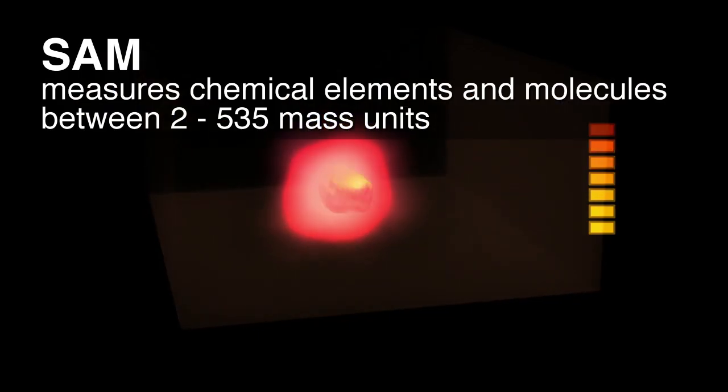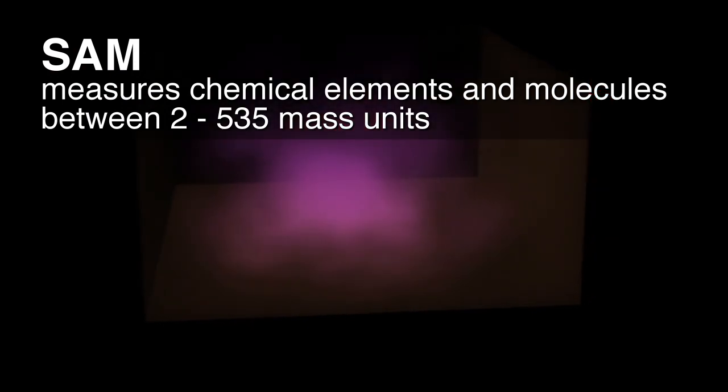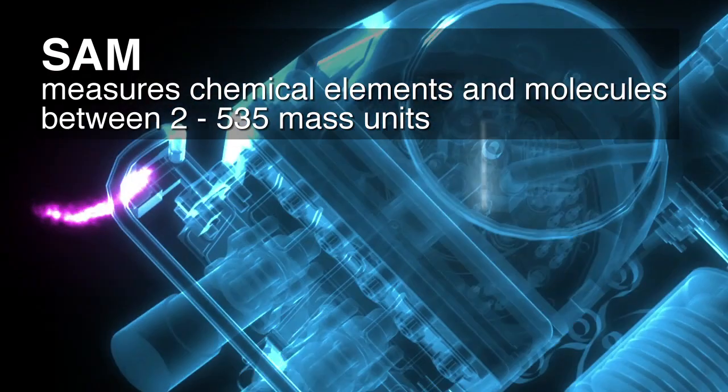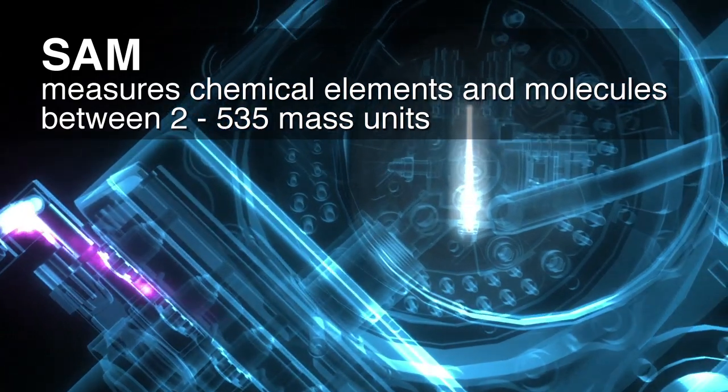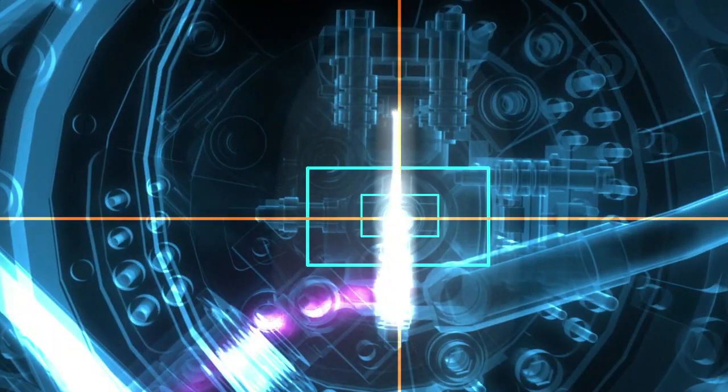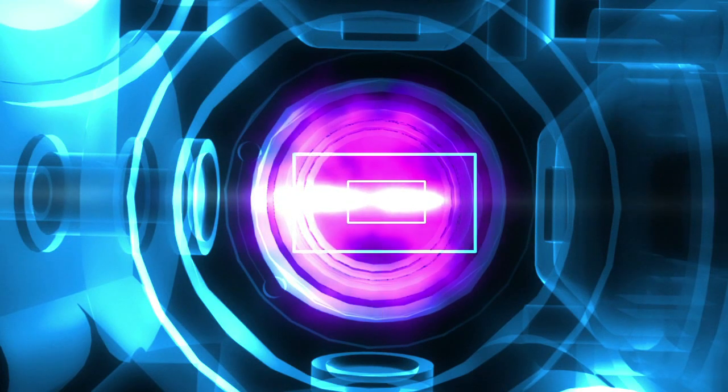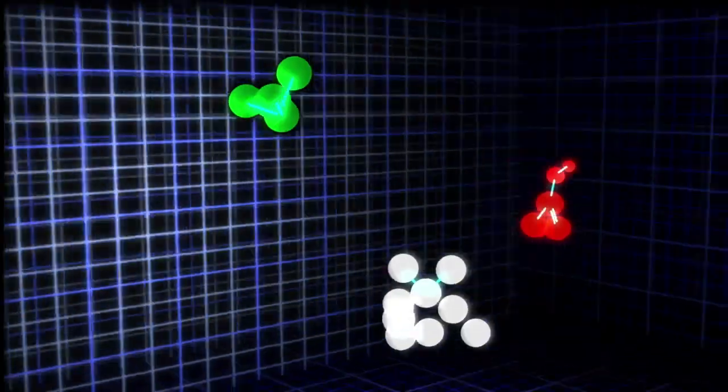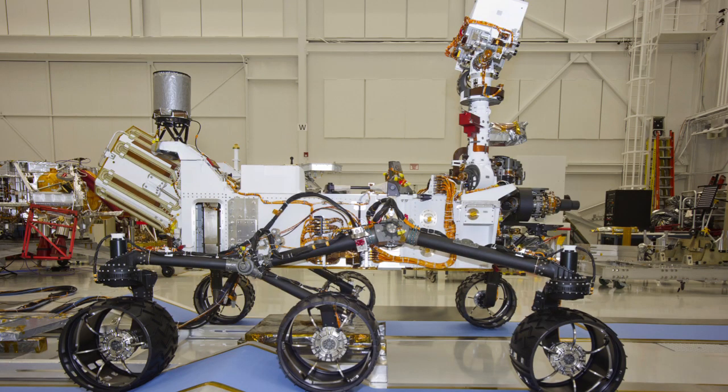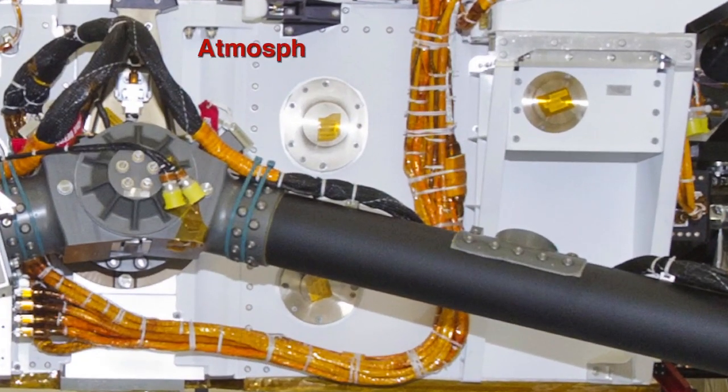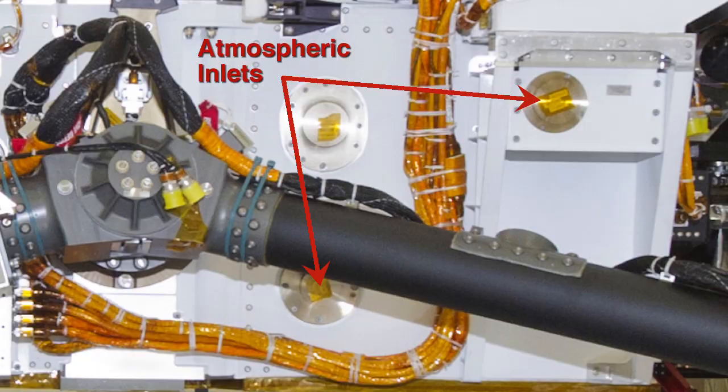SAM measures chemical elements and molecules in a mass or size range between 2 and 535 mass units, and we do this by looking at gases. We can bake solid samples until they give up their volatile components or their gases, or we can directly inhale the Martian atmosphere through our inlet ports.